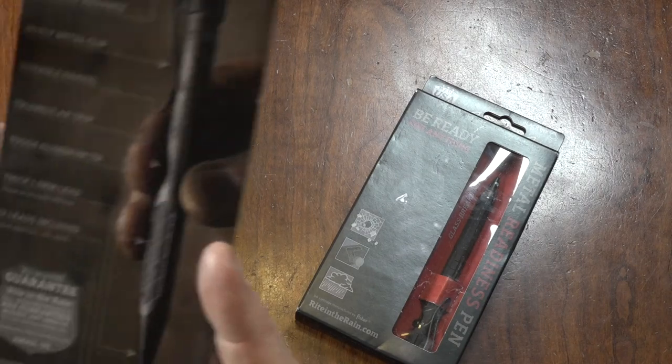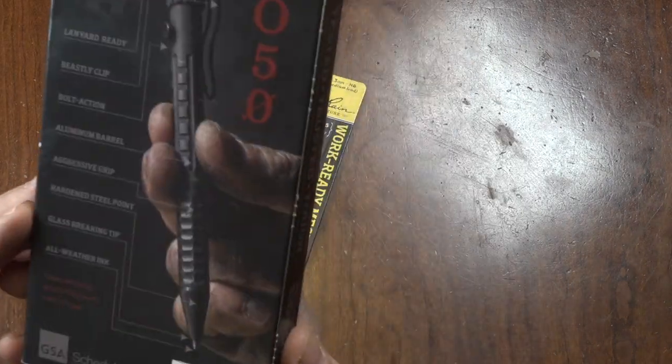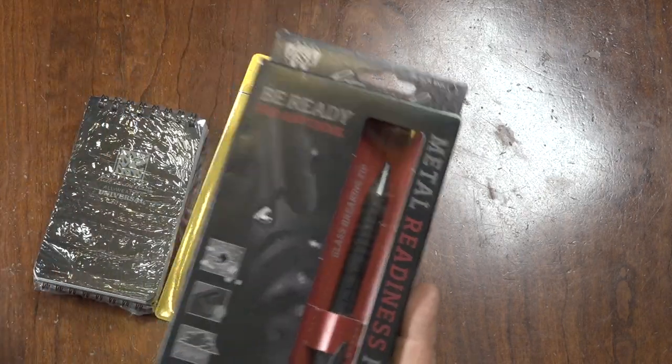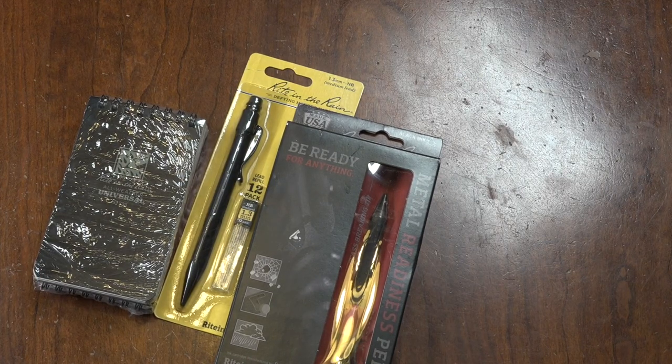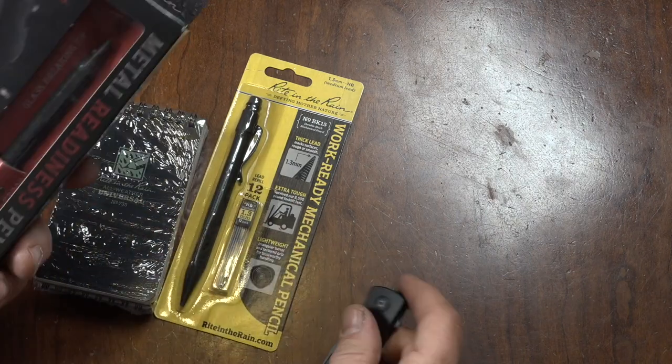This company, Rite in the Rain, I've actually never heard of them, but I was looking at them. They were founded in 1916. Made in the USA, and these are rugged, do-anything pens that write in the rain. They write in adverse conditions.